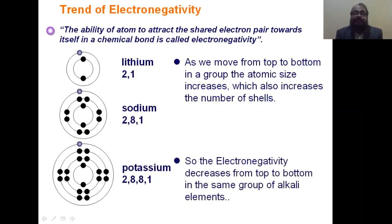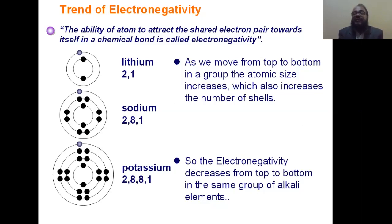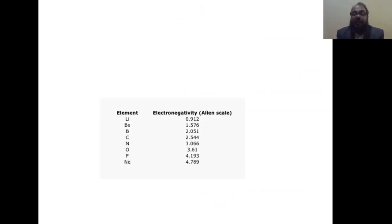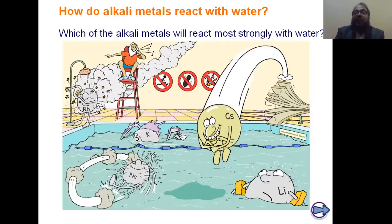The next property is electronegativity. It is the ability of an atom to attract a shared pair of electrons towards itself. A smaller atom has a higher tendency to attract electrons than a larger atom. As we move from top to bottom, from lithium to cesium or francium, atomic size increases and so the electronegativity value decreases. Lithium has an electronegativity of 0.9, while other groups' elements have higher electronegativity. The alkali elements have low electronegativity.